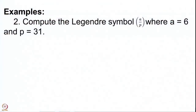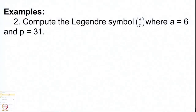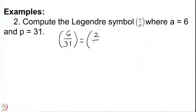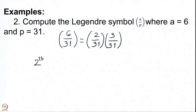Let us do one more computation where a is 6 and p is 31. We are going to use two of the results that we have proved earlier. We first observe that the Legendre symbol of 6 with respect to 31 is the product of two Legendre symbols, because we can write 6 as 2 times 3. So the Legendre symbol of 6 is the product of the Legendre symbols of 2 and 3, and we will need to compute 2 to the power 15 and 3 to the power 15 — remember, 31 minus 1 by 2 is 15.